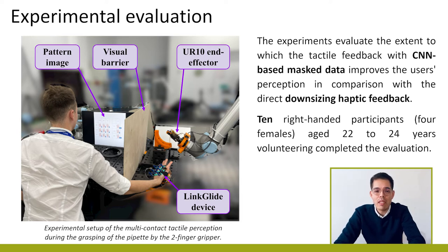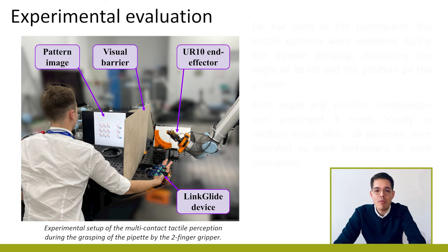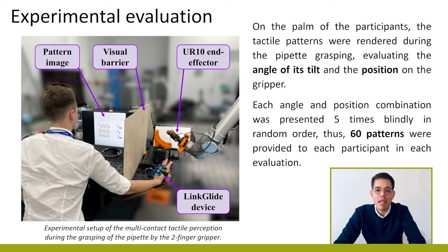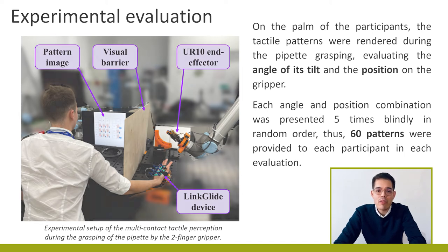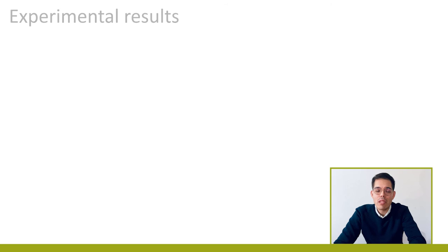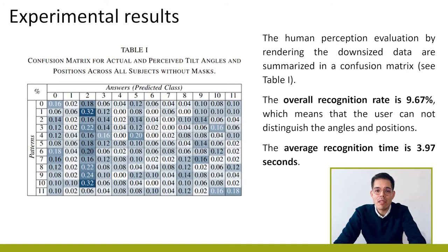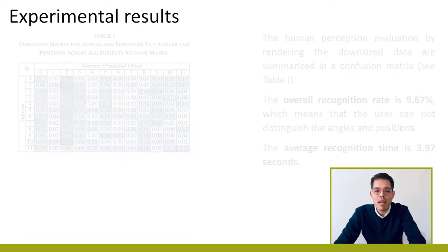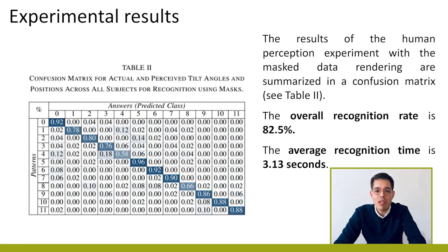During the second experiment, the CNN classification performed the data masking. Each of the four angles and three position combinations was presented five times blindly in random order. Using only the downsize method, the overall recognition rate was 9.67% and the overall recognition time was 3.97 seconds. Using the CNN mask, the overall recognition rate was 82.5% and the overall recognition time was 3.13 seconds.